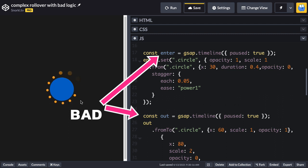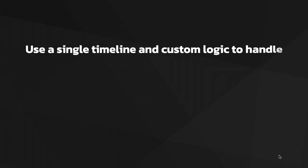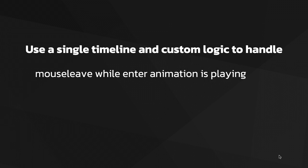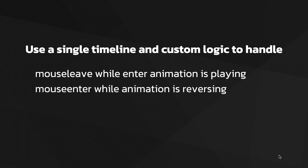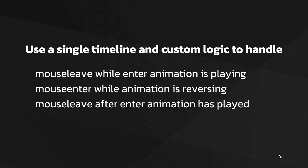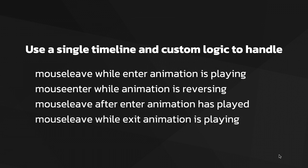Beginners tend to try to solve this with separate enter and out timelines, but that can cause loads of issues with overriding immediate render and you're likely to get very undesirable results. We're going to use a single timeline and custom logic to handle: mouse leave while enter animation is playing, a mouse enter while animation is reversing, a mouse leave after enter animation has played, and a mouse leave while exit animation is playing. Although this lesson focuses mainly on mouse leave and mouse enter animations, these concepts can be applied to many other complex UI interactions.